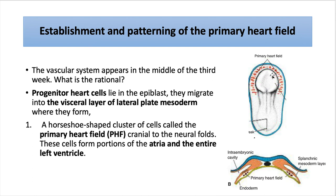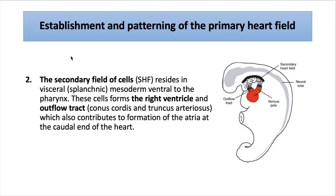Cranial to the neural folds, these cells form portions of the atria and the entire left ventricle. The other structure is the secondary field of cells, which resides in the visceral or splanchnic mesoderm, ventral to the pharynx. These cells will form the right ventricle and the outflow tract — here the conus cordis and the truncus arteriosus of the developing heart — which also contribute to the formation of the atria and caudal ends of the heart.